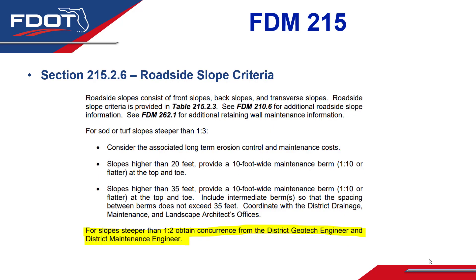Moving on to Section 215.2.6 for roadside slope criteria, some information from FDM 210-211 was moved into FDM 215 regarding when to involve the district geotech engineer. Because maintaining these slopes successfully is required for roadside safety, it was thought that the rational place to put this information was in Section 215. It's also convenient because most designers go looking to FDM 215 to know what slopes they may place on the roadside.